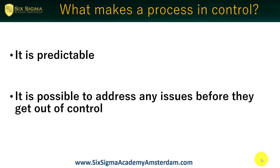What makes a process in control? First of all, the process is predictable — we can predict the future based on what happened in the past, no surprises whatsoever. Secondly, it is possible to address any issues before they get out of control. So in a certain way, it's an alarm system, a preventive system. We read signals that tell us: be careful, something wrong is about to happen before it happens.